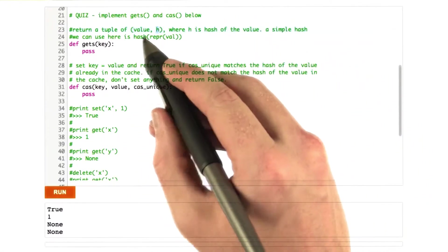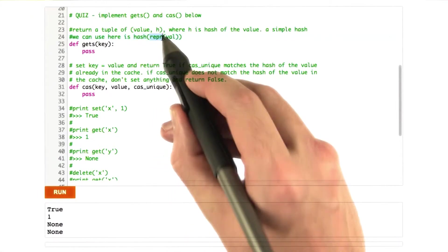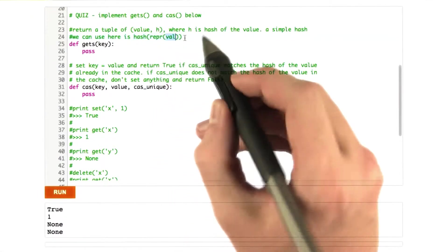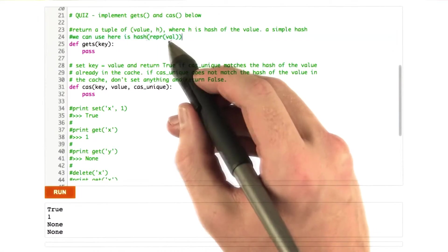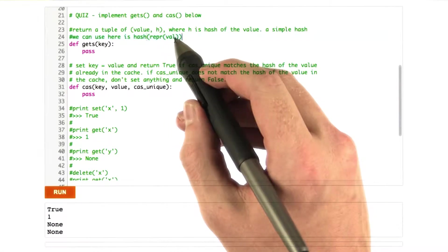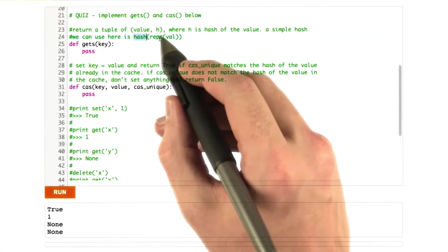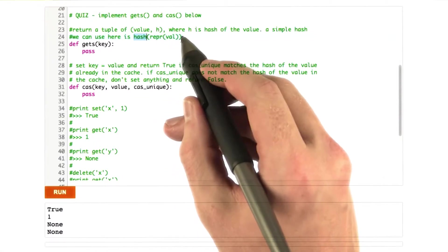A simple hash we can use is the built-in Python function hash on the built-in function called repr on the value. Repr turns any Python object into a string representation of it, which will work for our little test case here.